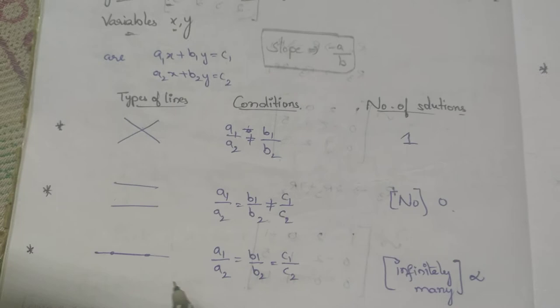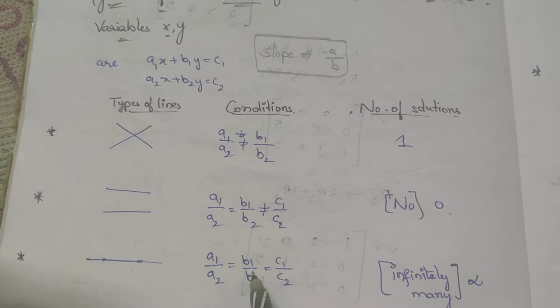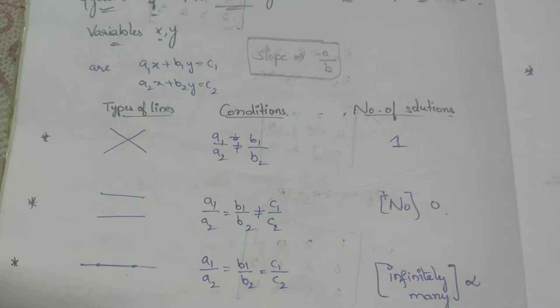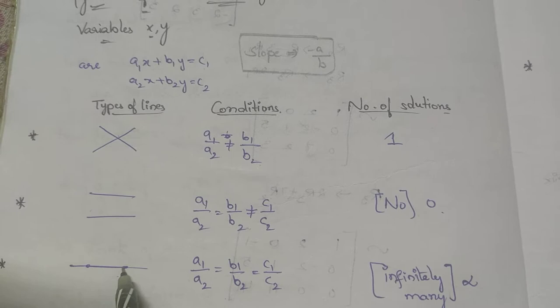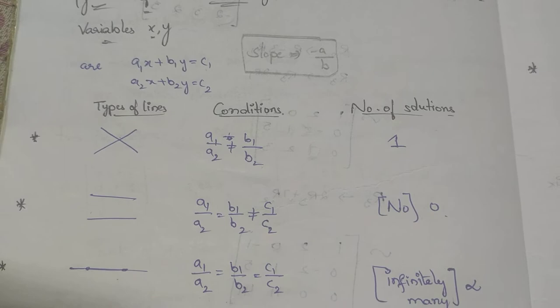For coincident lines, one is on the other, so the condition is a1/a2 = b1/b2 = c1/c2. The common solutions are infinite — all these are nothing but common points, and all common points are solutions — so infinitely many solutions.